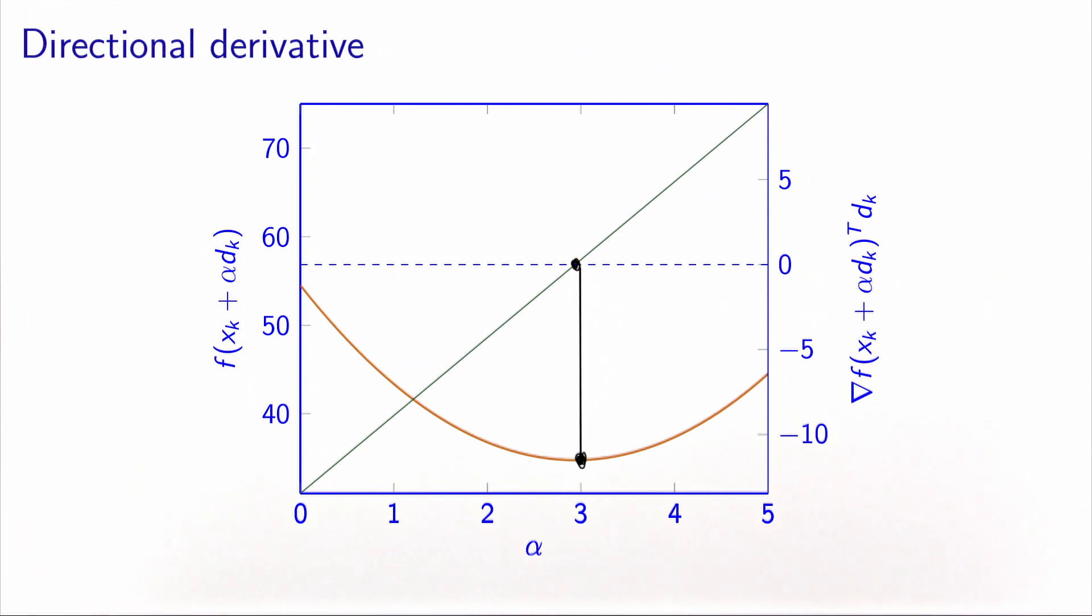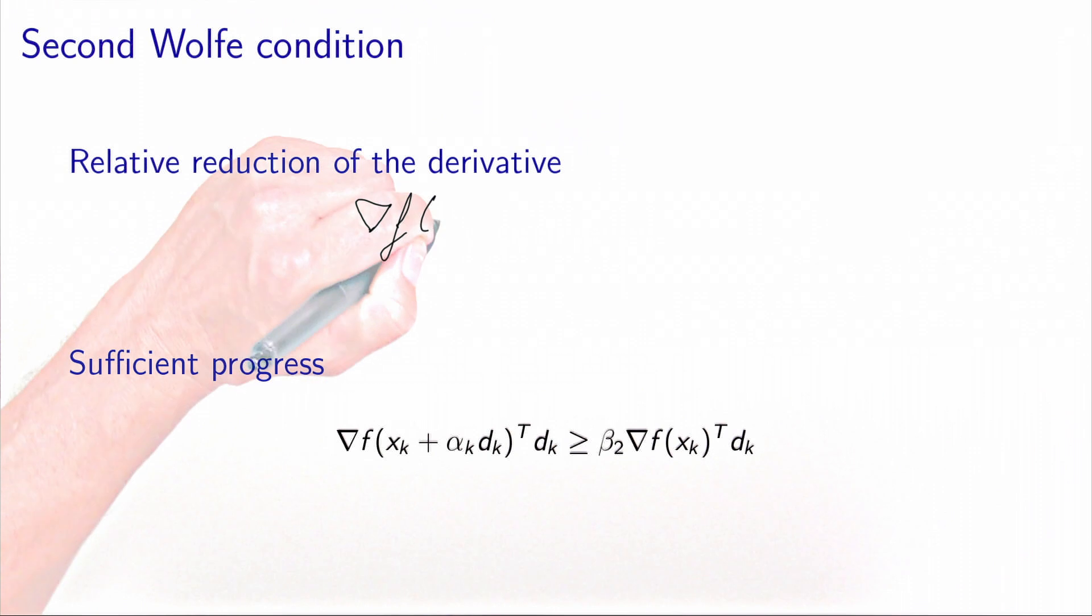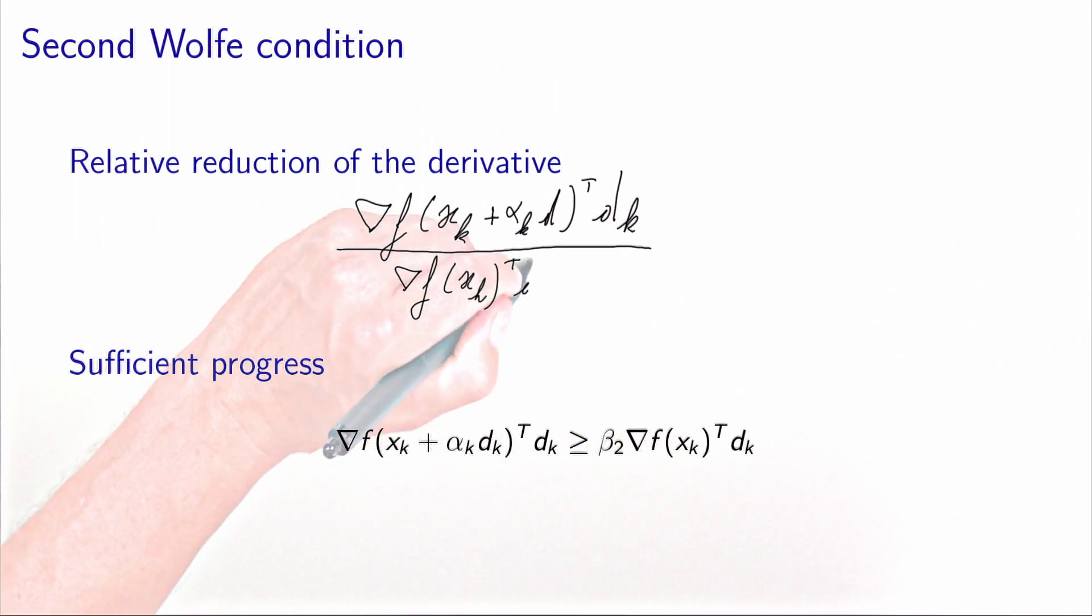But we don't need to be as demanding. We should say, maybe the value of the directional derivative should increase by a portion of the value that it had before it started. So the idea is that the value of the directional derivative in the new point, when you compare it to the value at zero, must be less or equal to some parameter beta two, where beta two, again, is between zero and one.